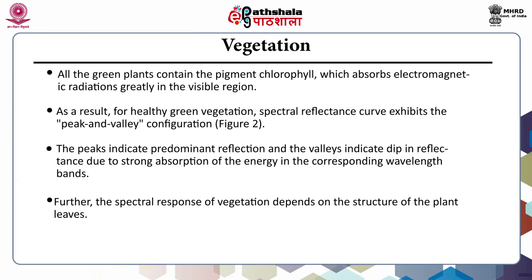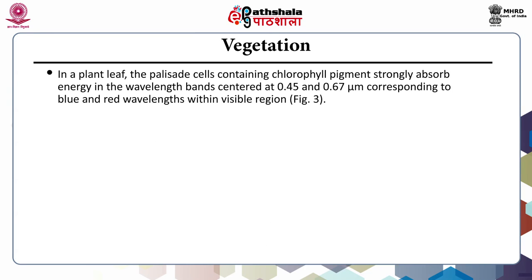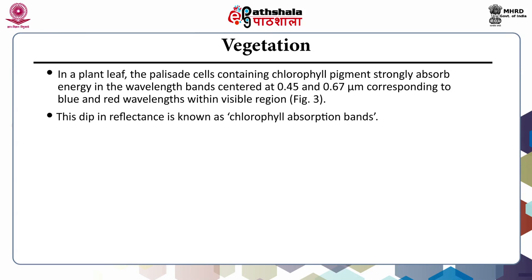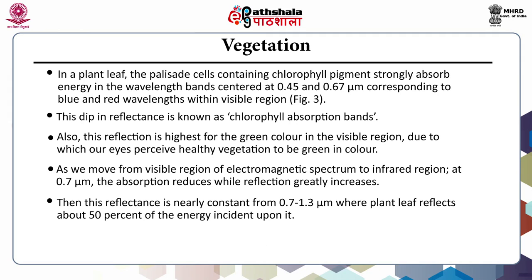The spectral response of vegetation depends on the structure of the plant leaves. In general, healthy vegetation are very good absorbers of electromagnetic energy in the visible region. In a plant leaf, the palisade cells containing chlorophyll pigment strongly absorb energy in the wavelength bands centered at 0.45 and 0.67 micrometer, corresponding to blue and red wavelengths within the visible region. This dip in reflectance is known as the chlorophyll absorption bands. Reflection is highest for green color in the visible region, which is why our eyes perceive healthy vegetation as green.